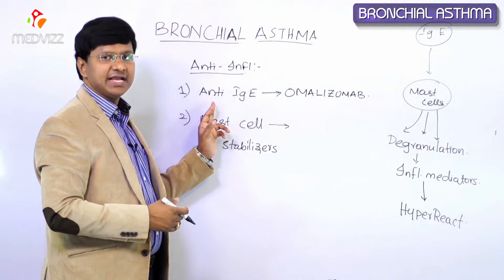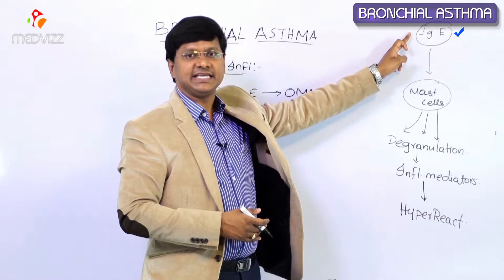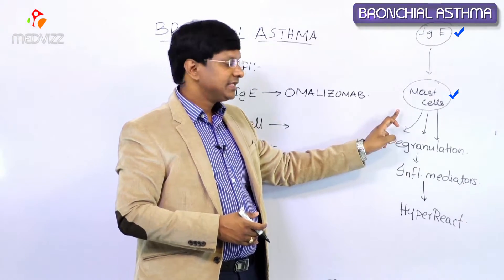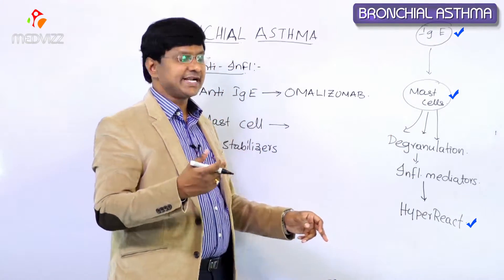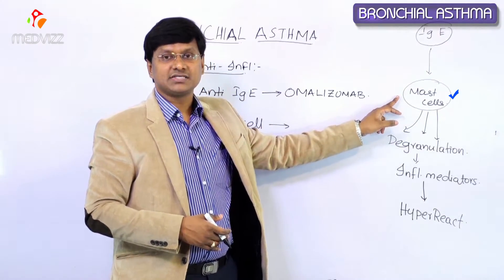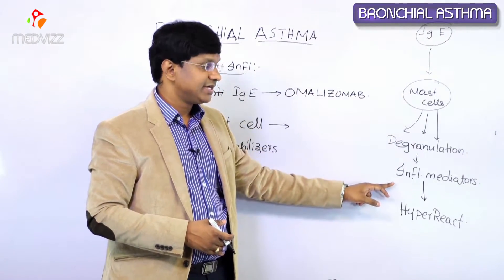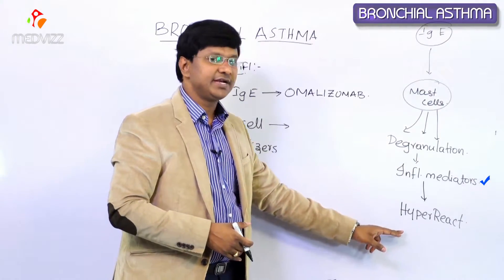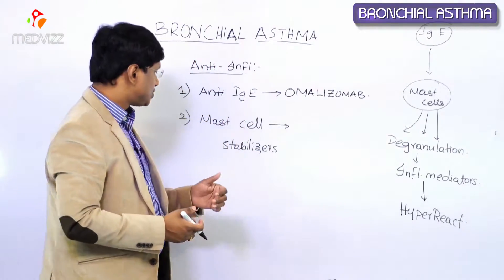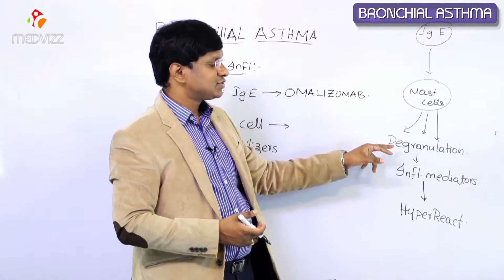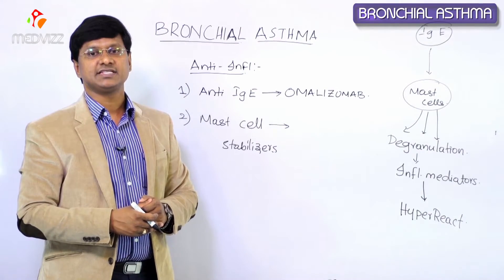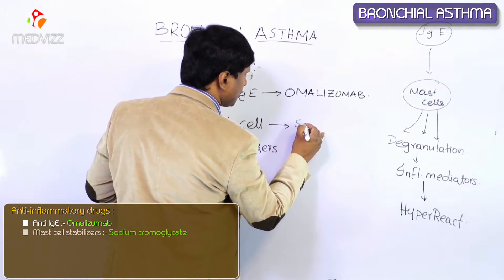We have anti-IgE drugs which neutralize IgE so it cannot bind to the mast cells, thereby preventing hyper-reactivity. The second group of drugs is mast cell stabilizers. Only when the mast cells undergo degranulation do they release inflammatory mediators, which bind to the airways causing hyper-reactivity. When you give mast cell stabilizers, there is no process of degranulation. The drugs used for stabilizing mast cells include sodium cromoglycate.